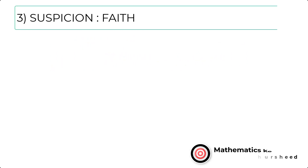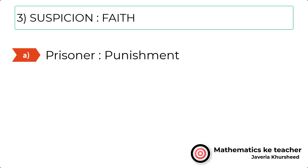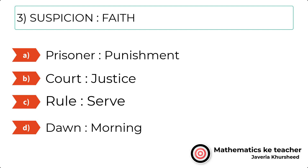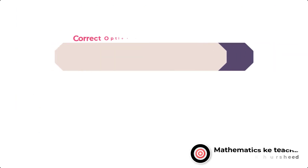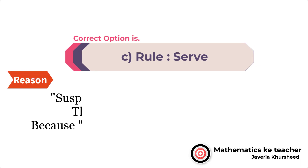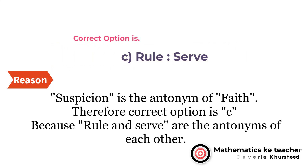Question 3: Suspicion, Faith. A. Prisoner, Punishment. B. Court, Justice. C. Rule, Serve. D. Dawn, Mourning. The correct option is C — Rule, Serve. Since suspicion is the antonym of faith, therefore the correct option is C, because Rule and Serve are antonyms of each other.